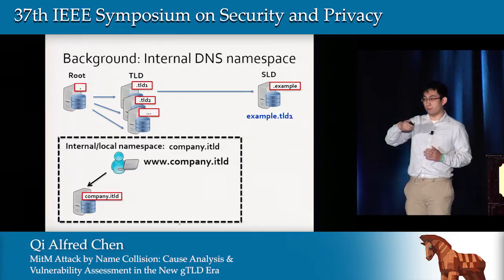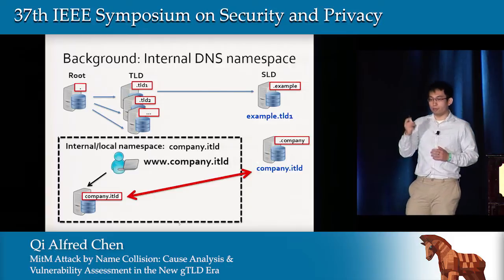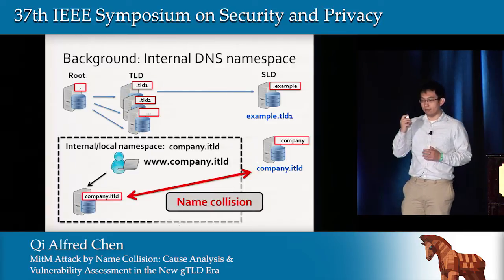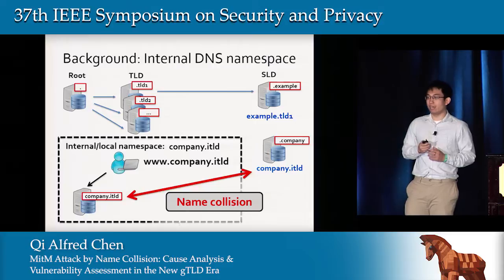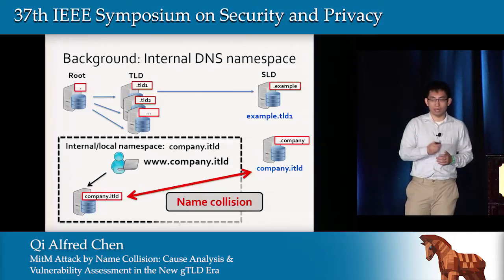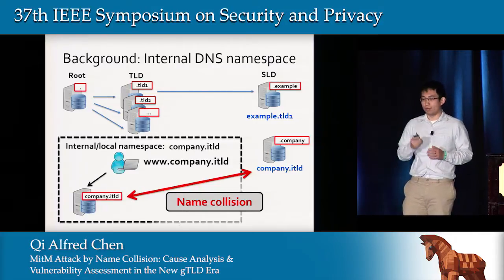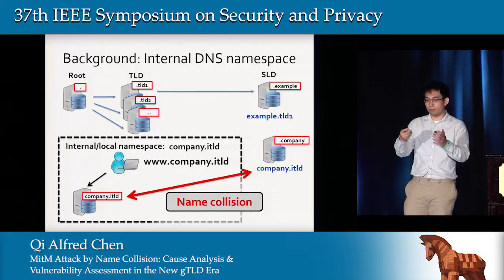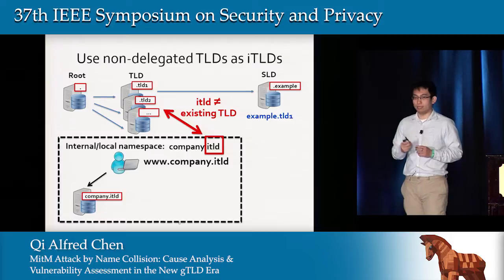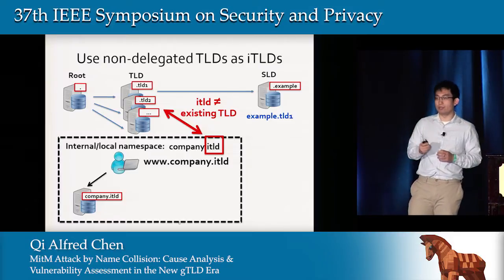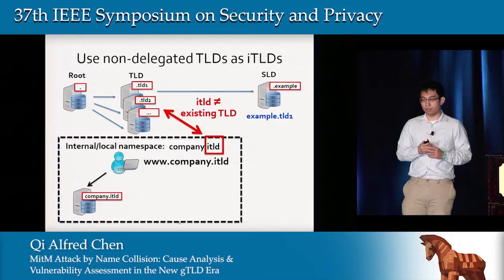To isolate these namespaces and prevent name collision, local networks usually use TLD strings that have not been delegated in the public namespace as their internal TLDs. If the same name is used both in the internal network and the public DNS namespace, we call it a name collision.